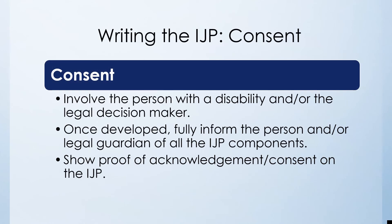Because the IJP process is voluntary, there is a need to ensure consent is provided by the person with a disability and, if applicable, a legal decision-maker — such as a county custodian for youth or a court-appointed limited or full guardian. It's also important to recognize that a person may have a supported decision-making agreement with a supporter who should be included. Once developed, the person and others involved must be fully informed of the IJP's content, and proof of consent should be acknowledged on the document itself.